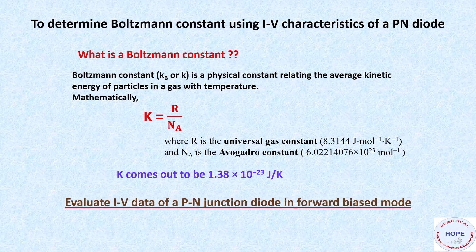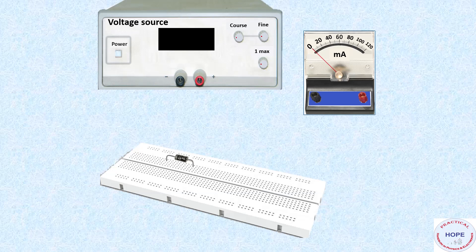So next task is to evaluate IV data of the p-n diode in forward biased mode. These are the apparatus that we require. First a power supply, millimeter, breadboard and a p-n junction diode.